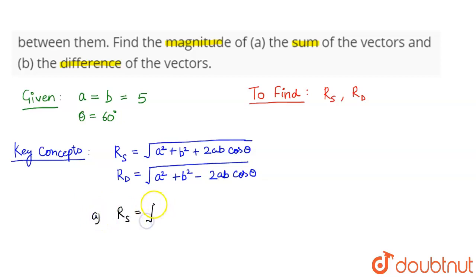So this will give us, because both the vectors have same magnitude, so this will be 5 squared plus 5 squared plus 2 times 5 times 5 cos theta. Because the angle between the two vectors is 60,